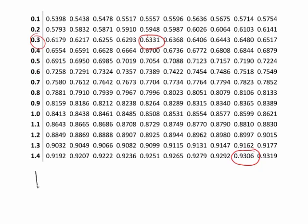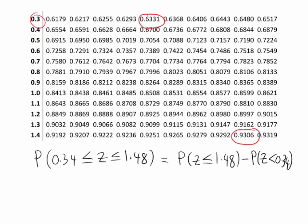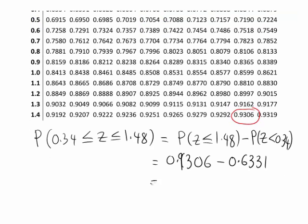Putting it all together: the probability that z is between 0.34 and 1.48 is the probability of z less than or equal to 1.48 (the upper value) minus the probability of z less than 0.34 (the lower value). That gives us 0.9306 minus 0.6331, so our probability works out to be 0.2975.